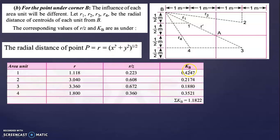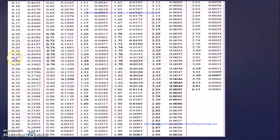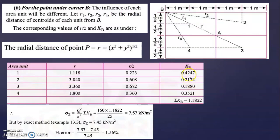Now find the KB value based on ratio 0.223. The value falls between 0.4242 and 0.4197 in the table; here 0.4242 is considered. Using interpolation, you get KB = 0.4223.